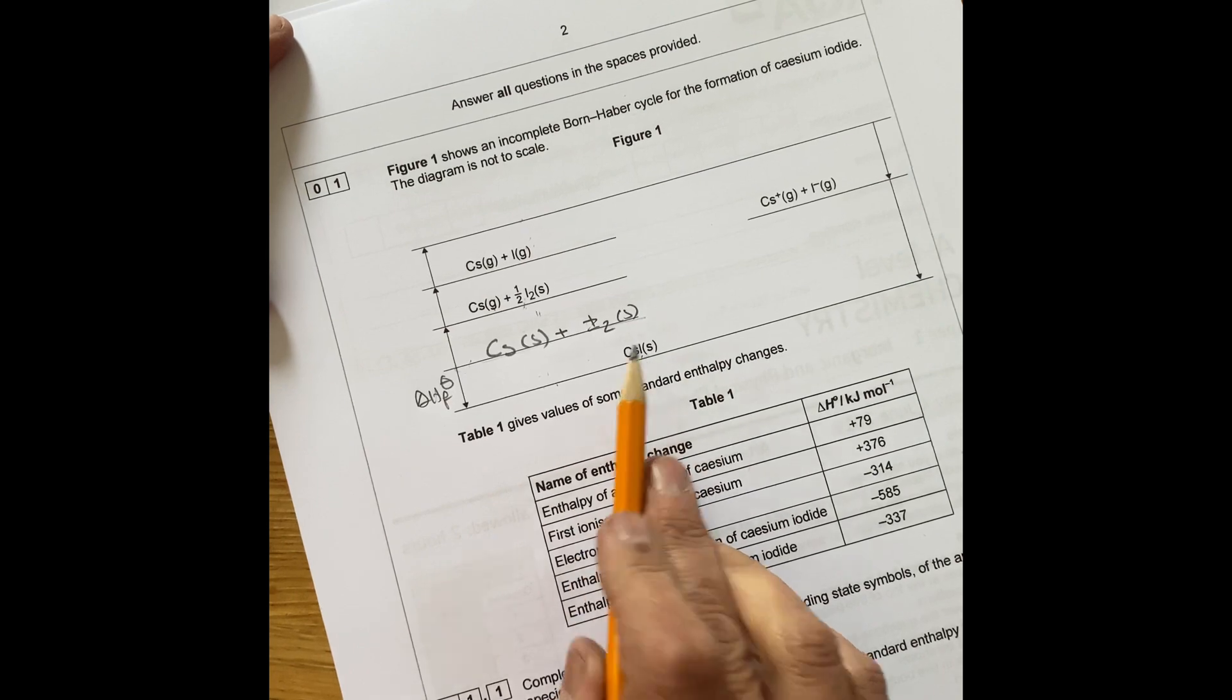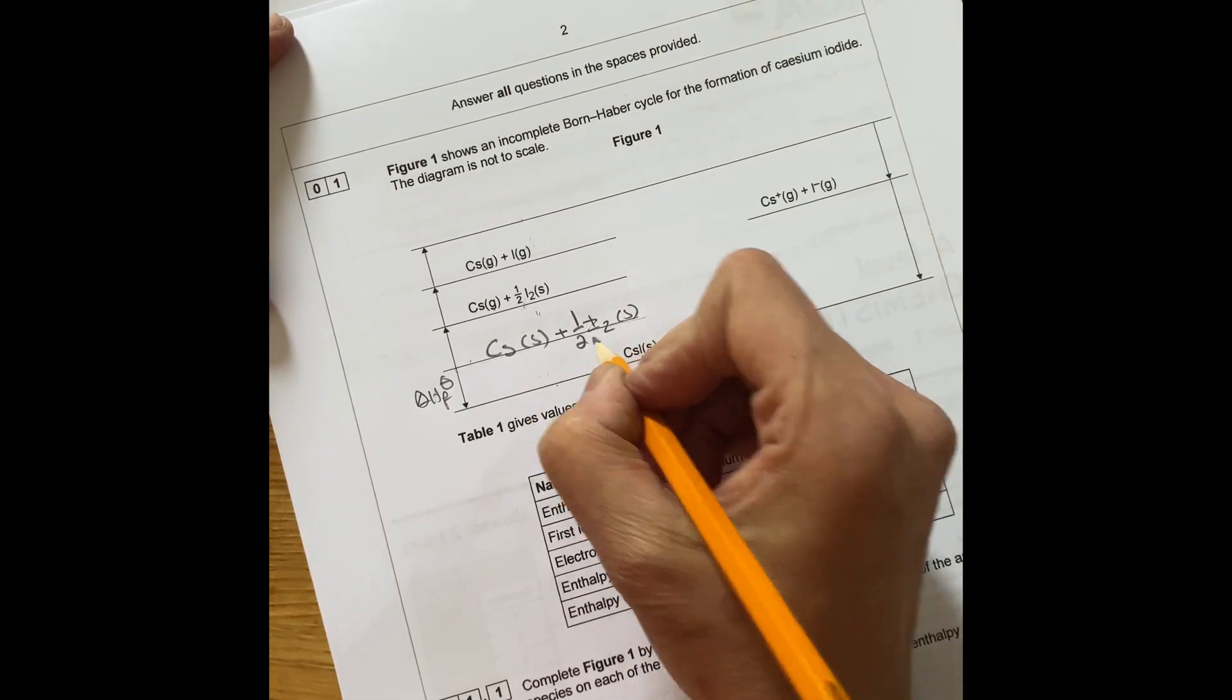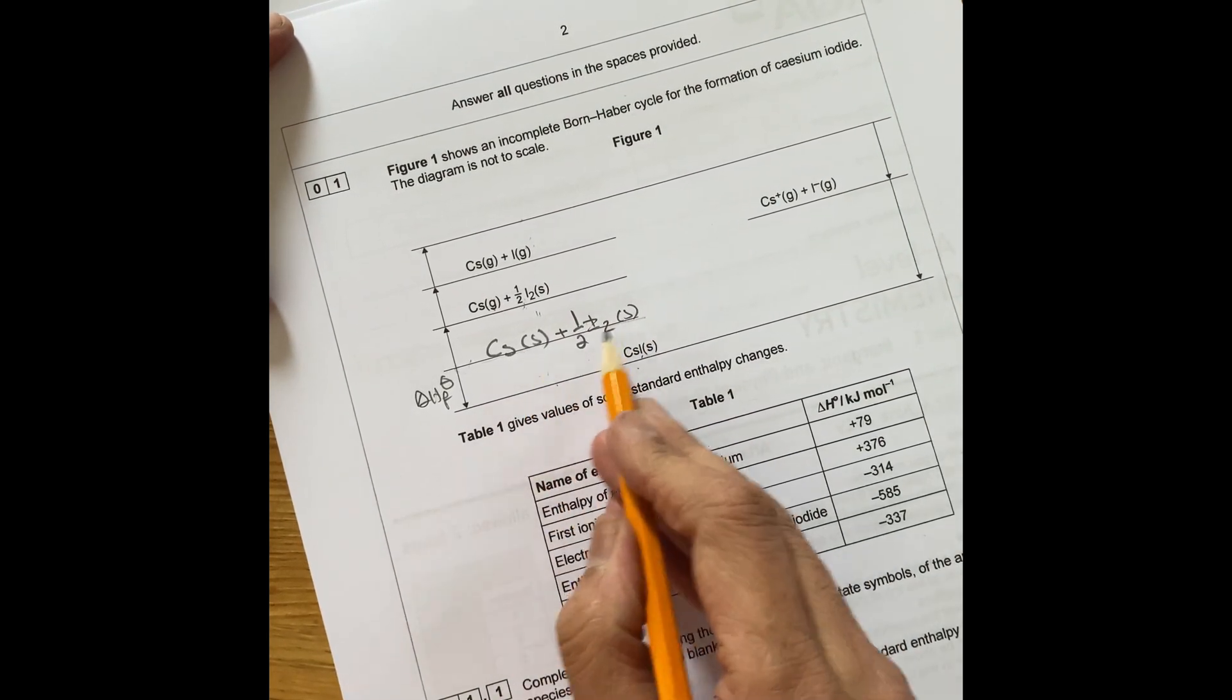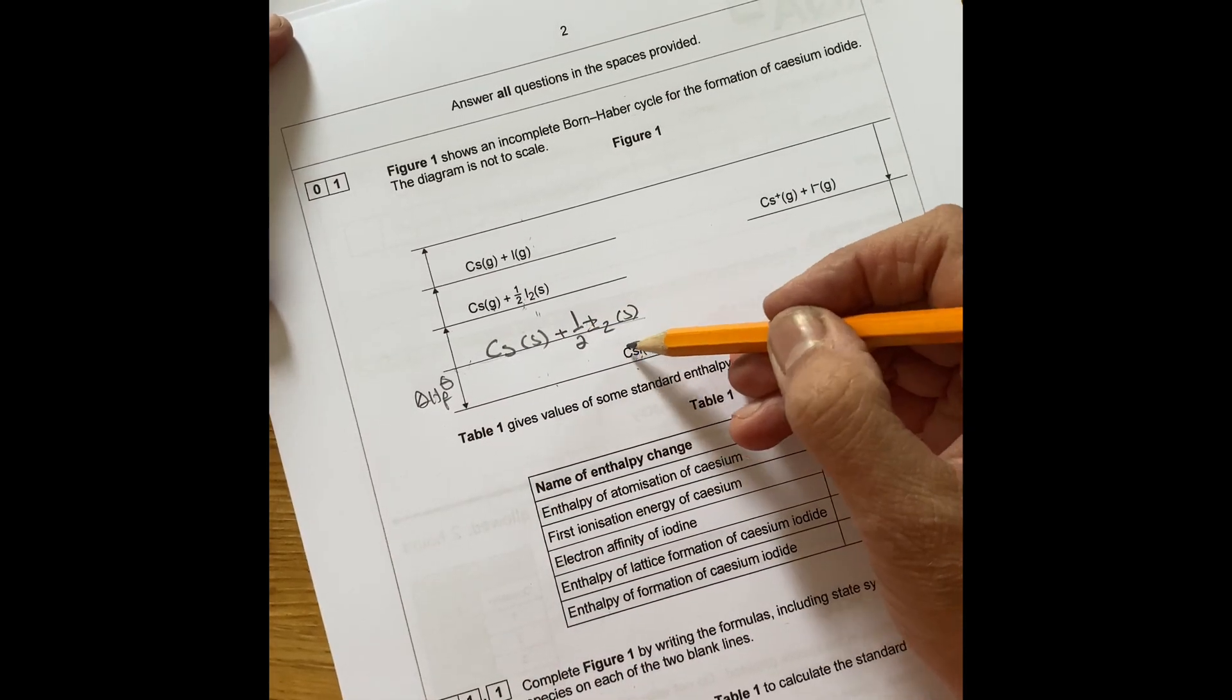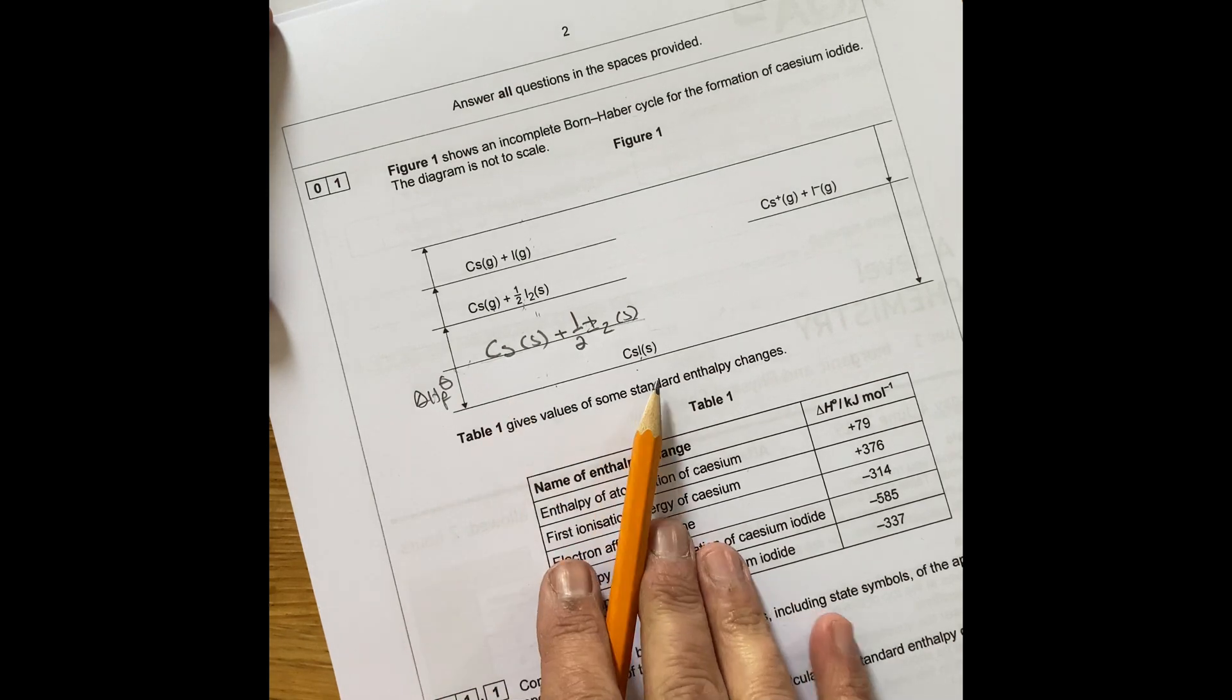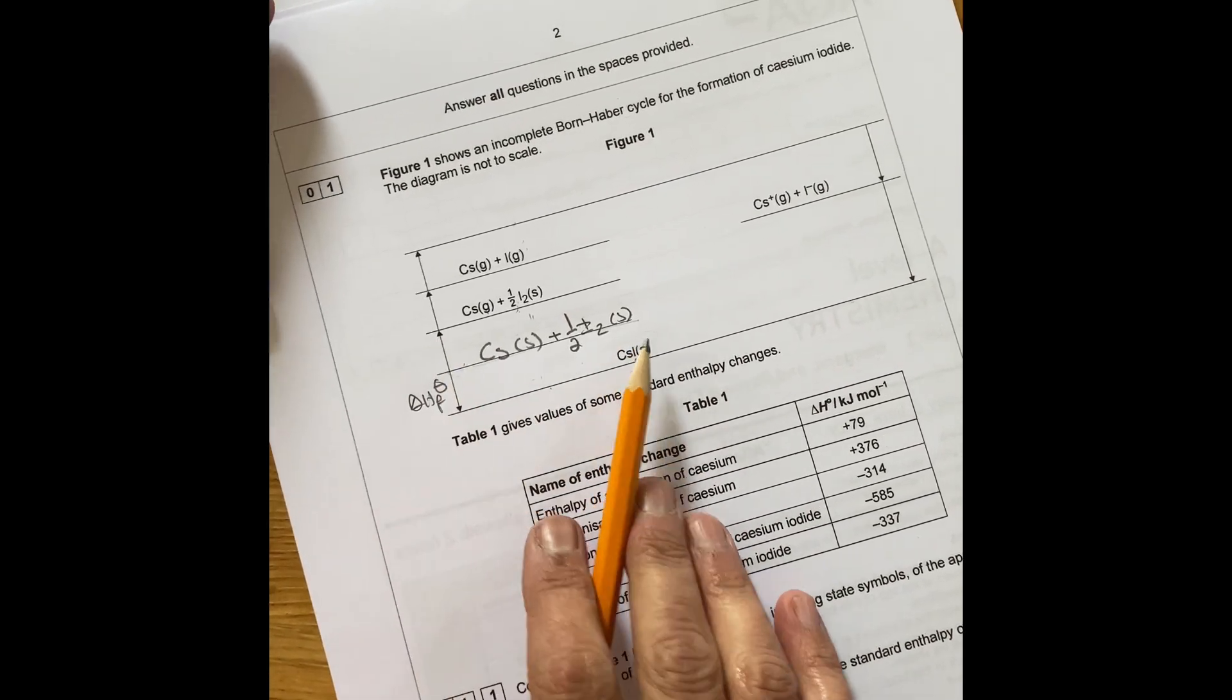But because there's only one iodine there, you've got to half it because you can only have one mole in there. So that's enthalpy change of formation of cesium plus iodine making cesium iodide. You need to know how to write these equations.